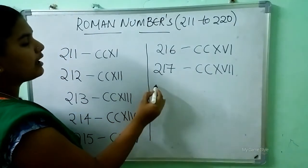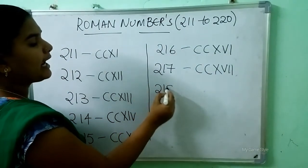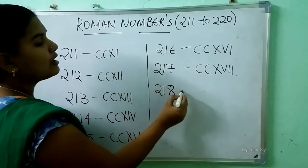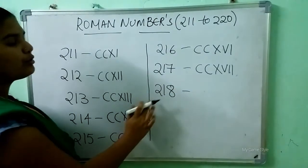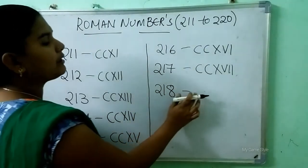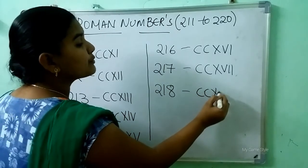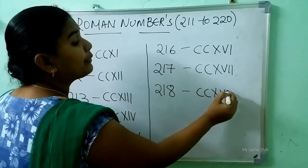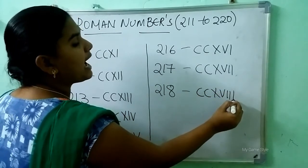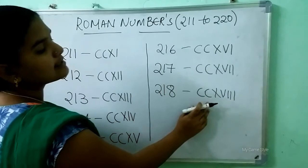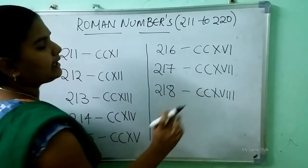After that comes 218. So how to write 218 here? Double C, X, V, triple I is 218.